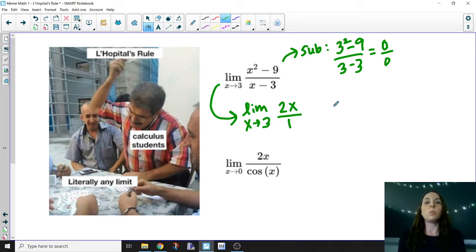And then we use substitution again. 2 times 3 over 1 is 6. And there's the answer to your limit.